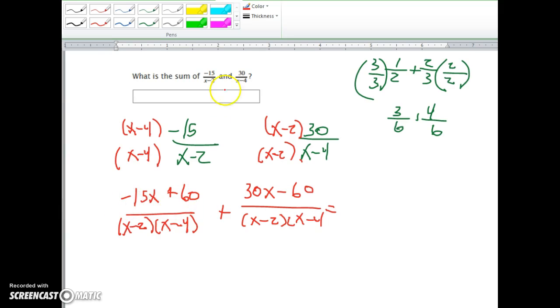So when we're adding them, the whole thing can be written over just one of the denominators. So it turns out to be -15x plus 30x, which is 15x, and plus 60 minus 60 turns out to be 0.